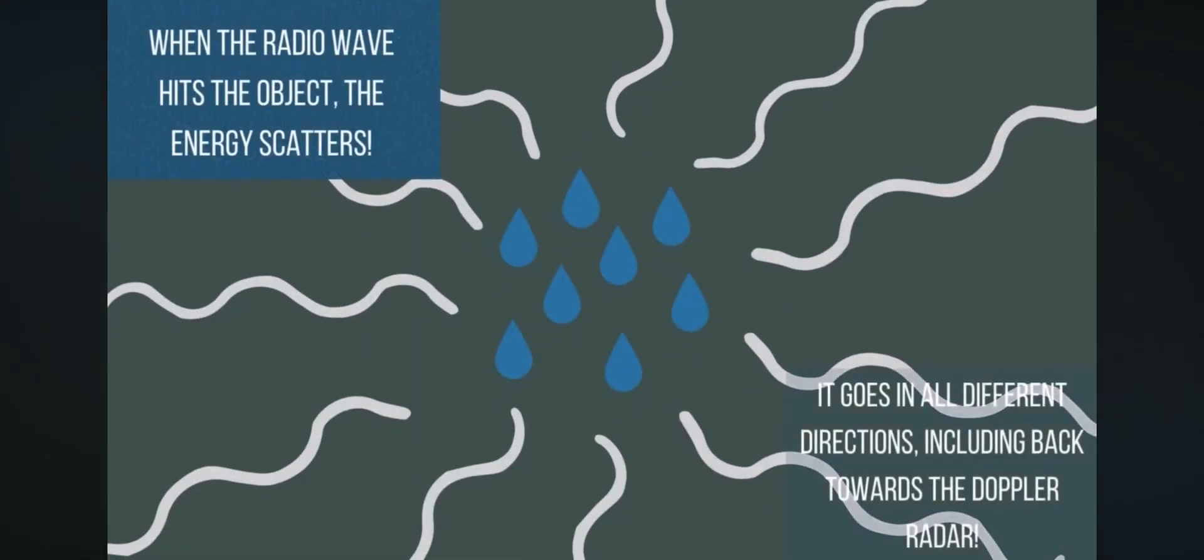When the radio wave hits the object, the energy scatters. It goes in all different directions, including back towards the Doppler radar.